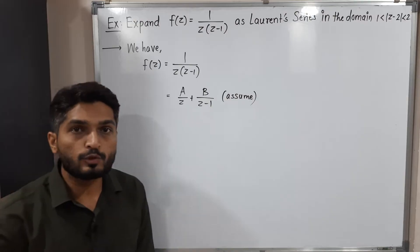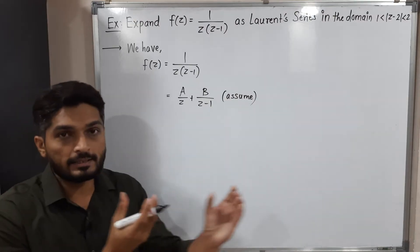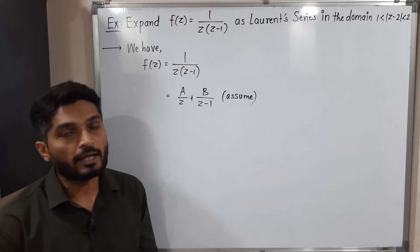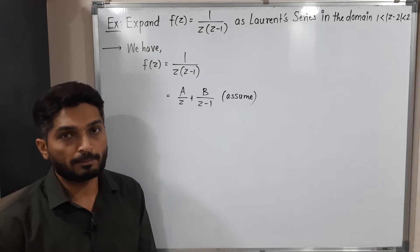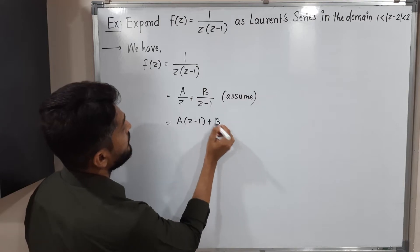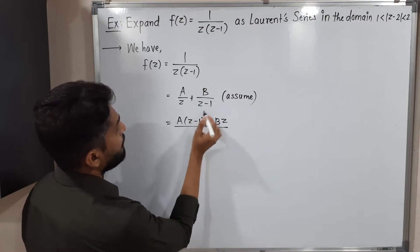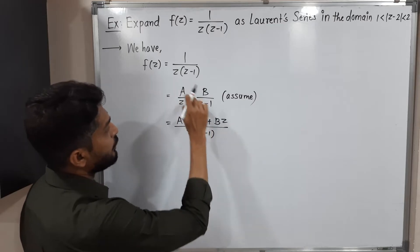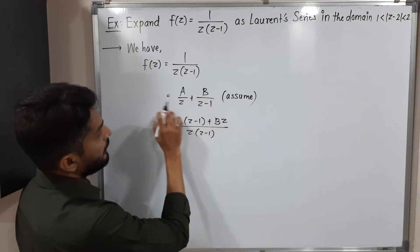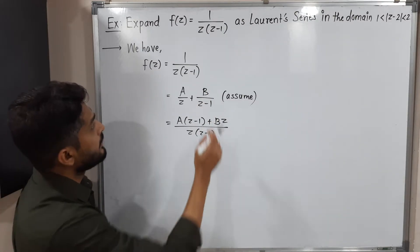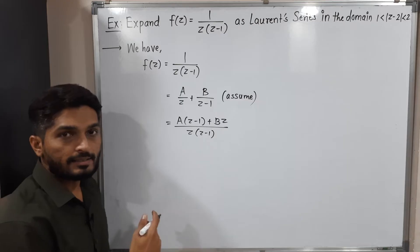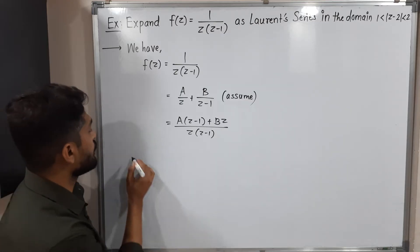Our target is to find the values of A and B so we can express this function as a sum of two terms. Cross-multiplying gives A(z-1) plus B·z in the numerator, divided by the product of denominators. Since both sides have the same denominator, we cancel it and equate numerators.